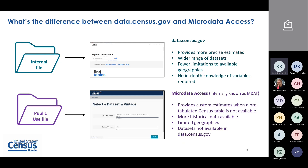MDAT allows you to create tabulated tables when pre-tabulated tables on data.census.gov aren't available. It has more historical data — for example, Current Population Survey data going back 20 or 30 years. However, it does have limited geography: the finer you go with your topics, typically you have fewer geography options. In many cases it's just U.S. and states, and sometimes PUMAs are available.